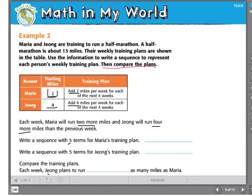When I look back here, I see she begins with two. And my rule is to add two. My next term would be four. When I add two more, I get six. Add two more, I get eight. And when I add two more, I get ten. That's five terms in my sequence. So I'm finished with Maria.